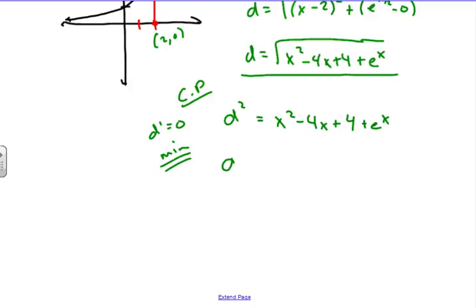So we're going to take this derivative, and we have 2d(dd/dx). I really shouldn't write it like that, but we are using implicit. We have 2x - 4 plus the derivative of e^x, which is e^x.